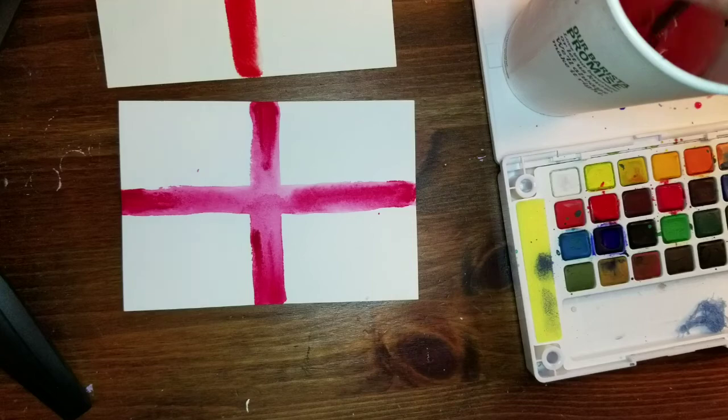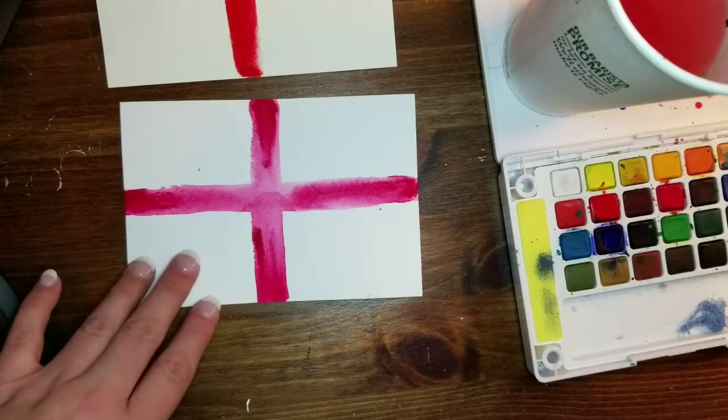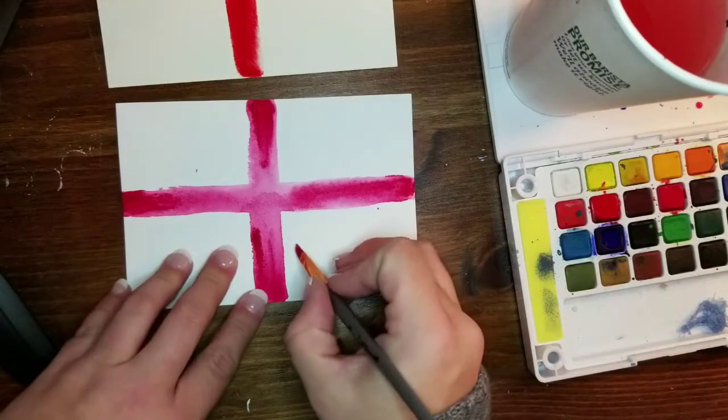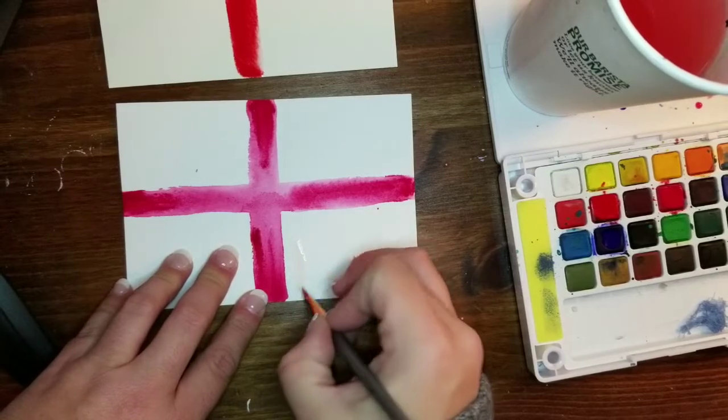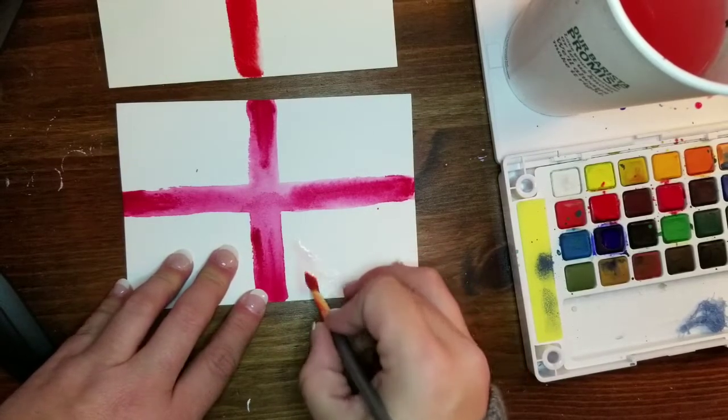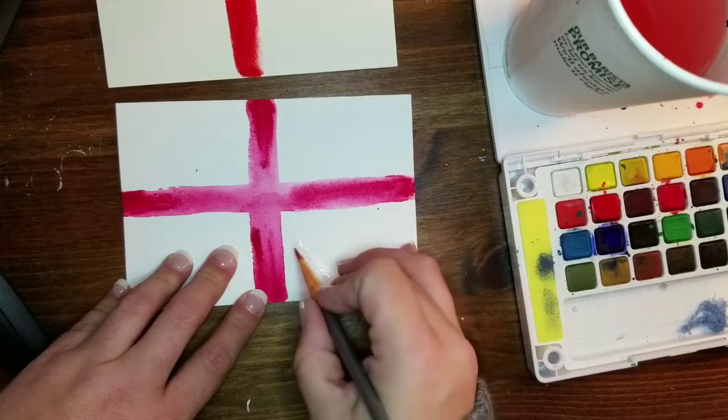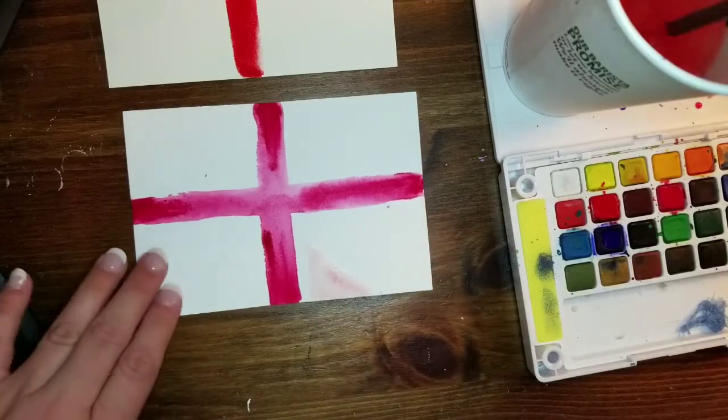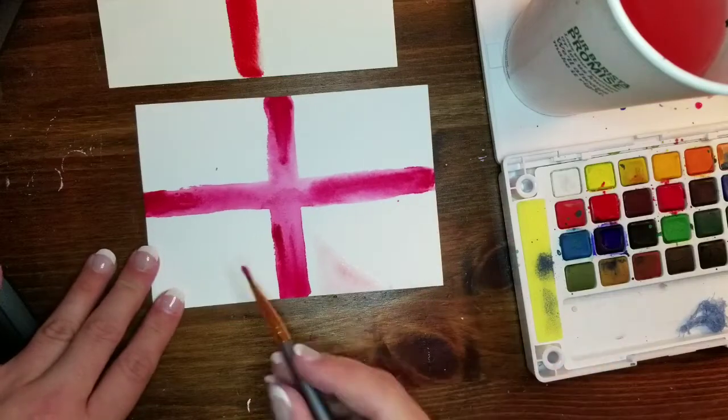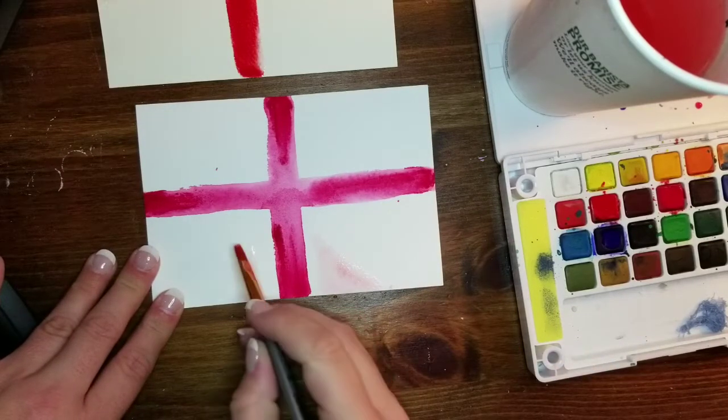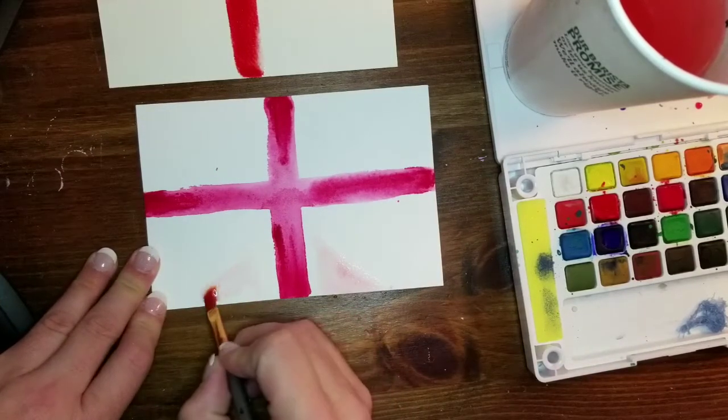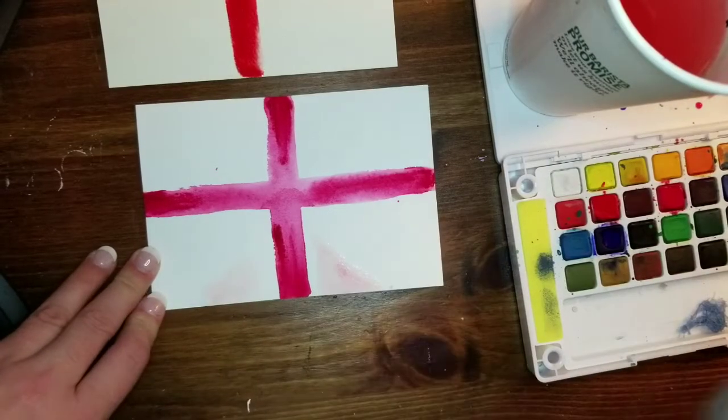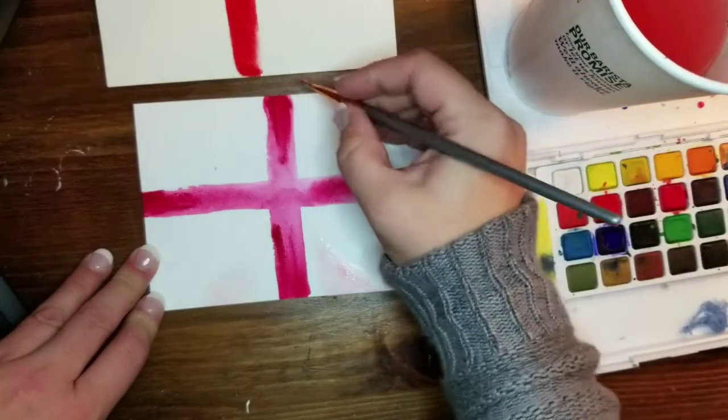The next thing I'm going to do is blue. I'm going to again take my water and paint in where I want the blue to go. This just re-wets the paper. I'm not an expert at watercolor at all but I do know that this helps. I'm drawing in these blue triangles that will end up being blue just with my water.